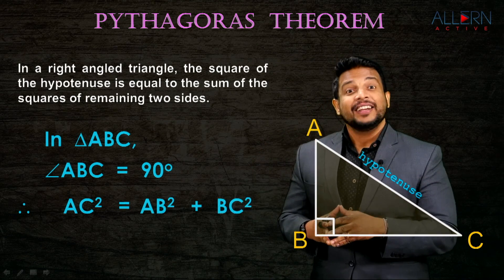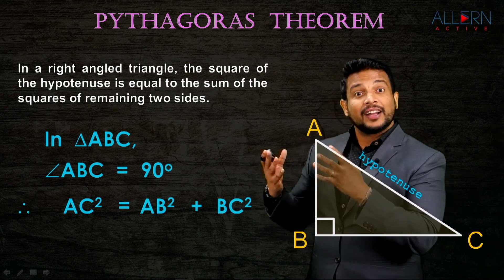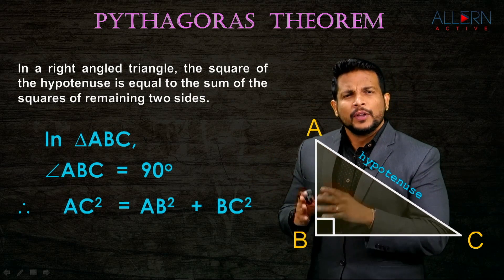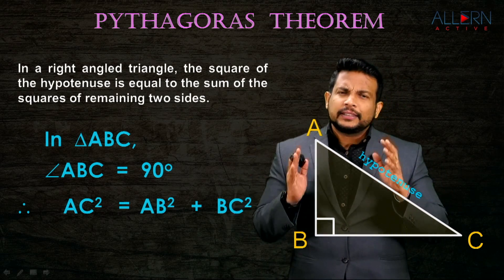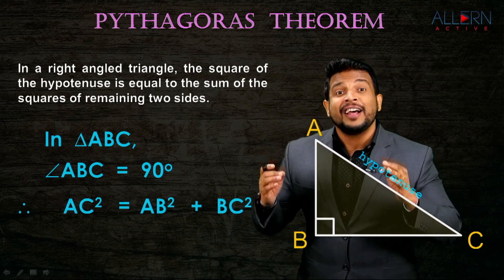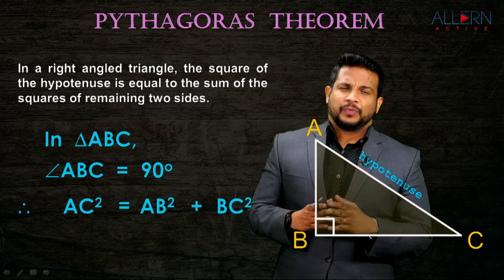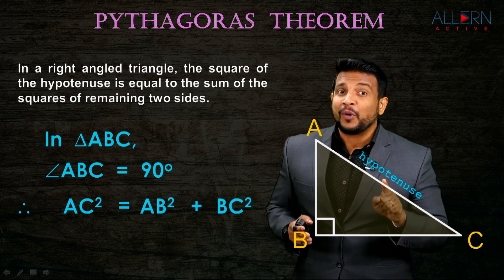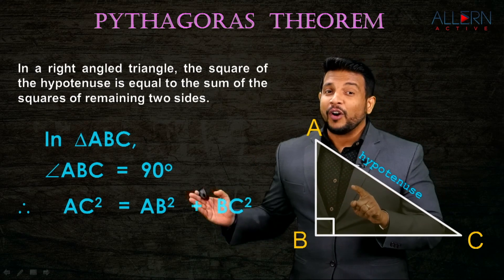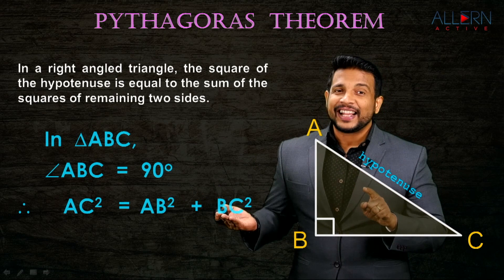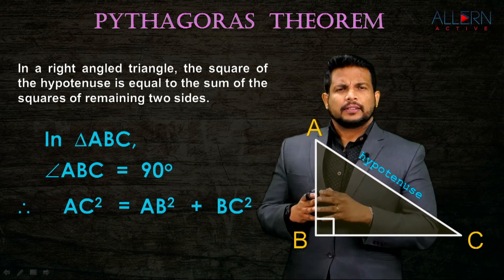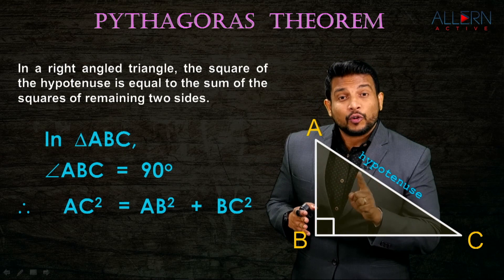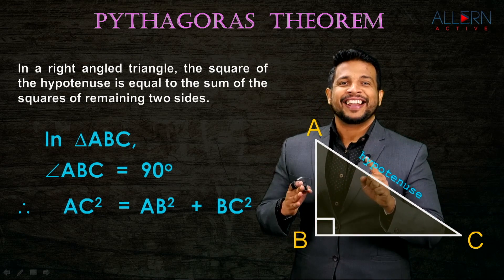That is the understanding from this particular theorem. One thing is clear: this theorem is applicable only in a right angle triangle. In a right angle triangle, the square of the hypotenuse is equal to the sum of the squares of the remaining two sides. Pythagoras gave us the relation between the lengths of the three sides of a right angle triangle.